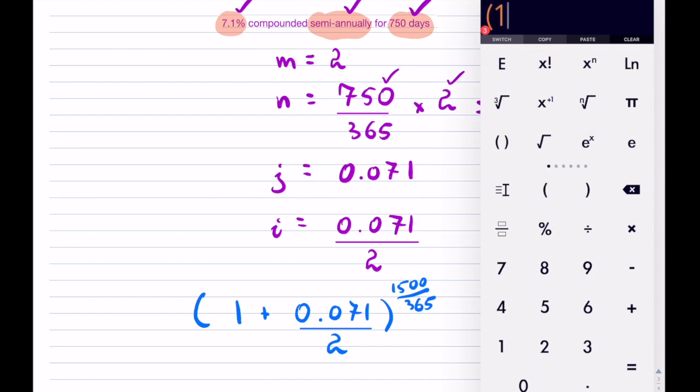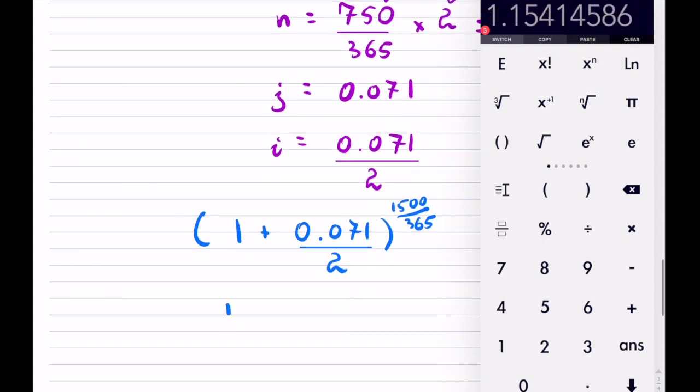So again, 1 plus 0.071 divided by 2. Close your bracket. Hit your exponent button. 1, 5. I'm sorry. Put the brackets because it's a fraction. 1, 5, 0, 0. Divided by 365. And then close the bracket for the exponent. And then hit equals. And there you have it. So it will be 1.1541 and so on. You can write them all down. Again, don't round it.